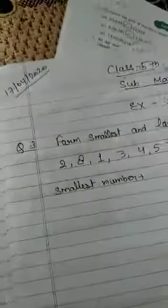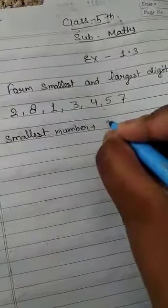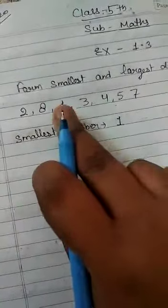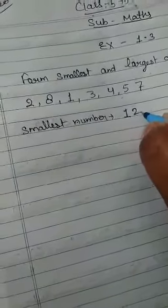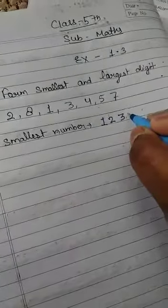Which is the smallest number in this? First, the smallest digit is 1. Ascending order means 1, 2, 3, 4, 5, 7, 8.